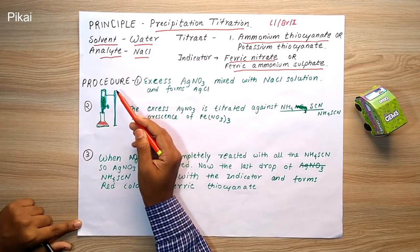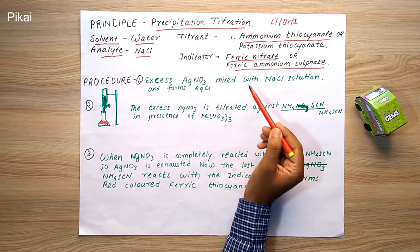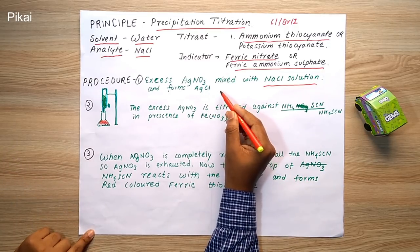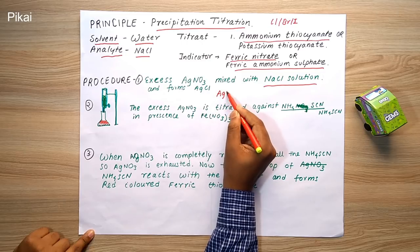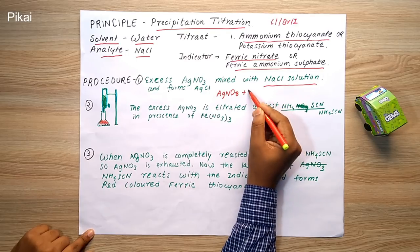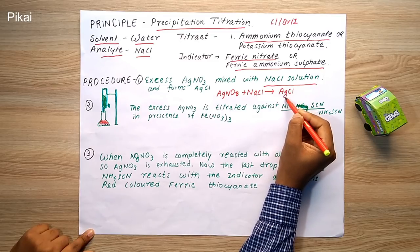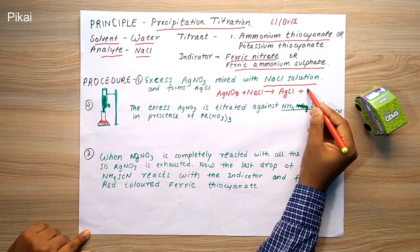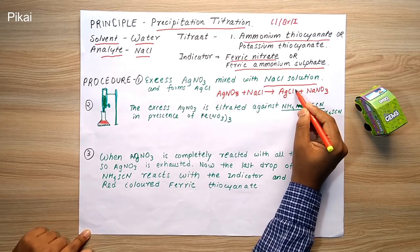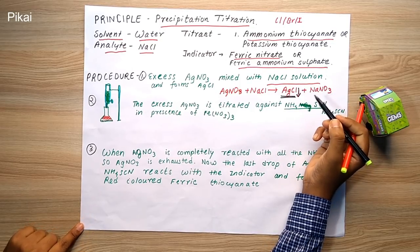Moving to the procedure, there are three main steps. The first step is to use excess AgNO3 and mix it with the NaCl solution. AgNO3 mixes with NaCl and forms AgCl and NaNO3 as a byproduct. The AgCl precipitates out as it is insoluble, forming a precipitate after mixing excess AgNO3 with NaCl.